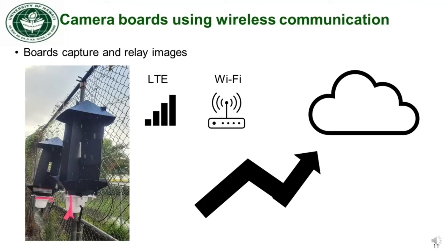Currently, ESP cam boards use Wi-Fi communication to send their captured images to our website. The algorithm is that the board regularly wakes up, takes pictures, sends them to our website, and goes to deep sleep at night in order to save solar energy on the battery. Wi-Fi data is free but geographically restricted to router access point availability. Recently, we were able to use an off-the-shelf cellular modem to send images over a cellular network with Raspberry Pi. Cellular LTE network is less restrictive geographically, but we need to pay for cellular data.